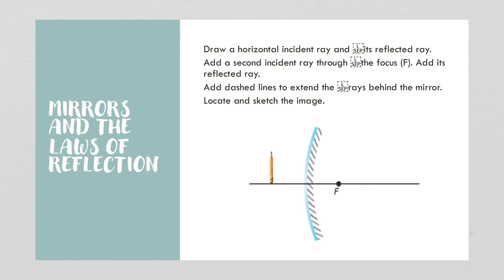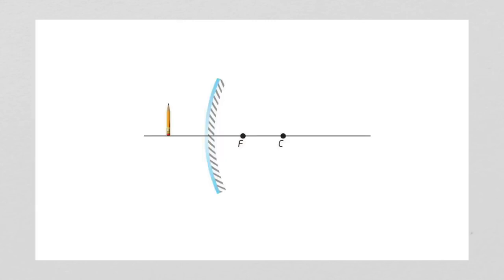You'll notice the focal point is behind the mirror because the curve is the other way. We draw our horizontal light ray inwards — there's our horizontal light ray — and then it's going to reflect through the focal point. We show it bouncing off the mirror; it hits the mirror and bounces back from the focal point.